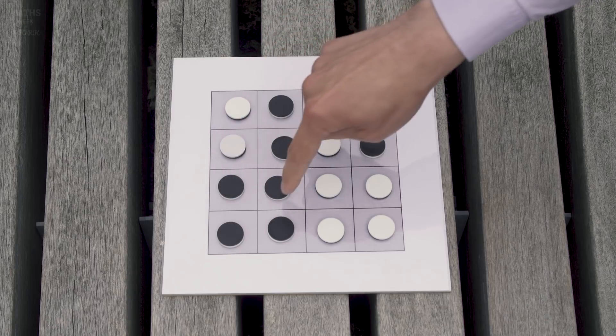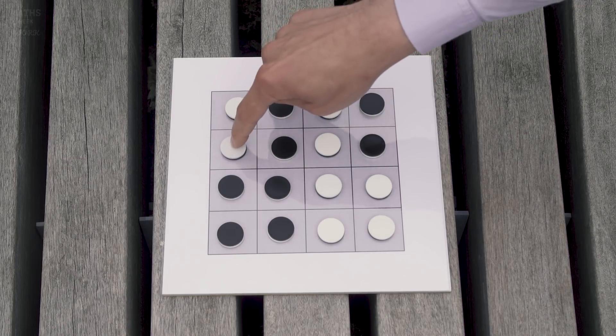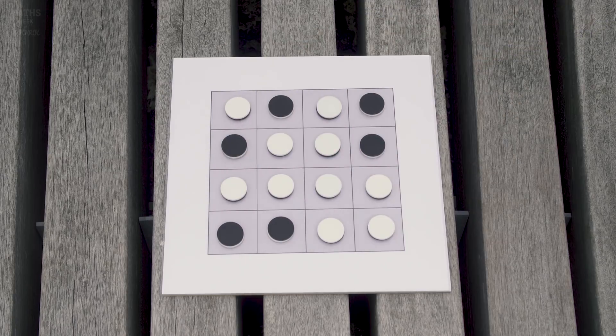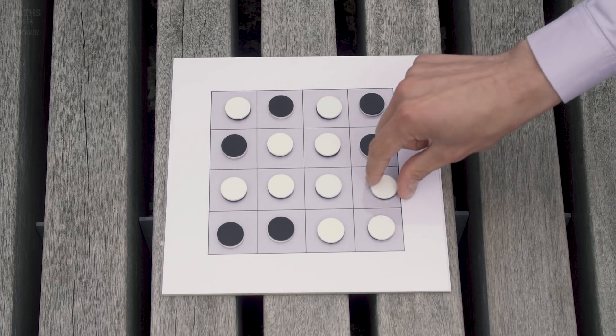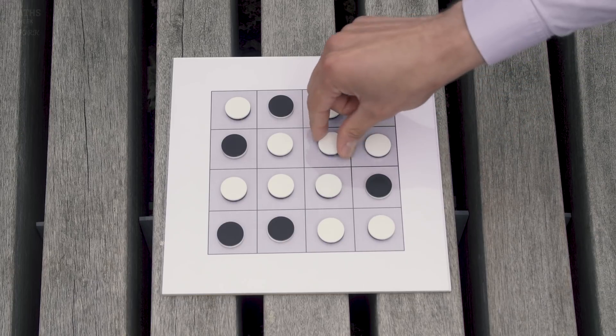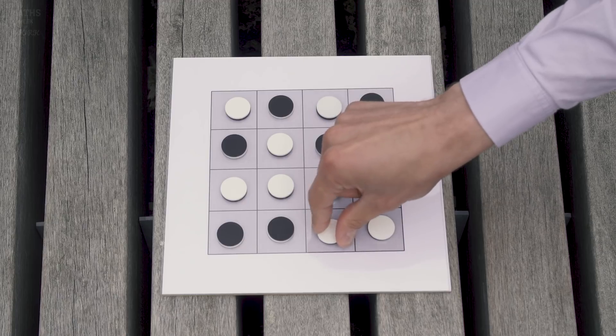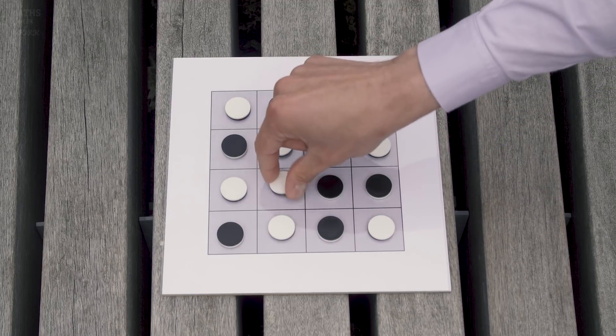And by the same argument we need to turn over this 2x2 square to ensure that this counter is black. And we need to turn over this 2x2 square as well to make sure this counter is black. And finally this one needs to be turned over too and so we need to turn over this 2x2 square.